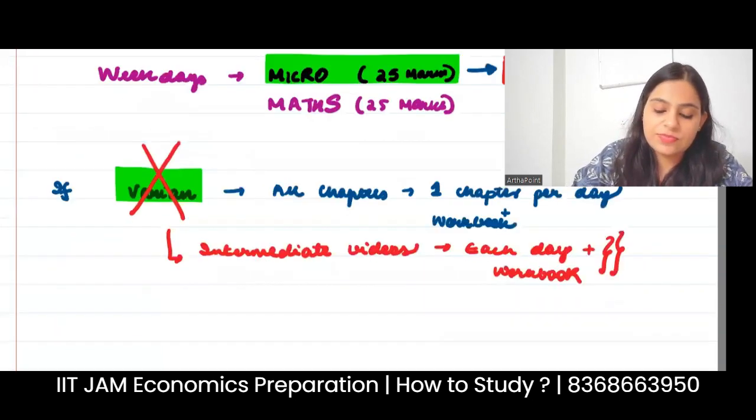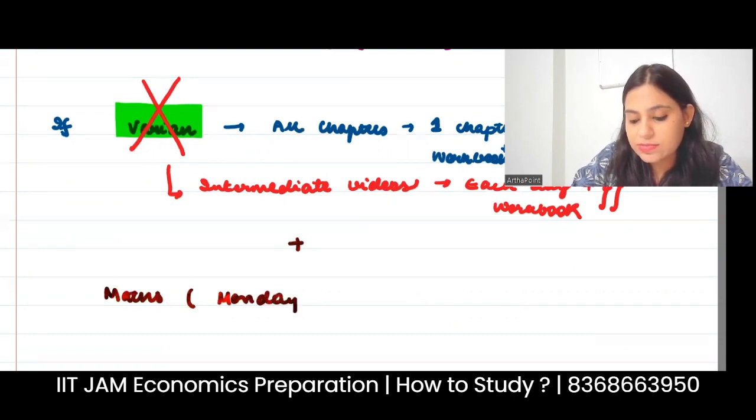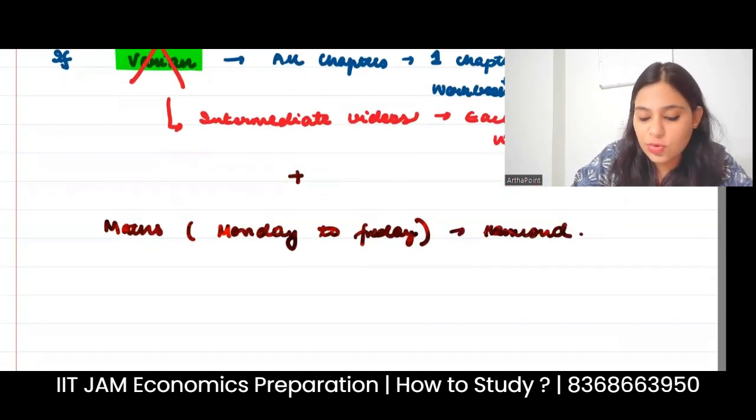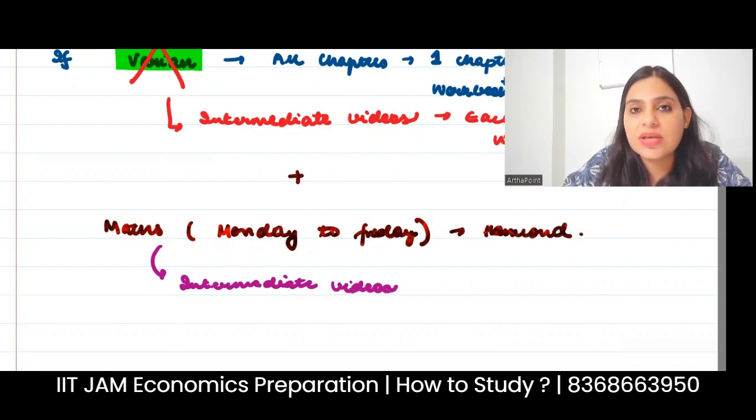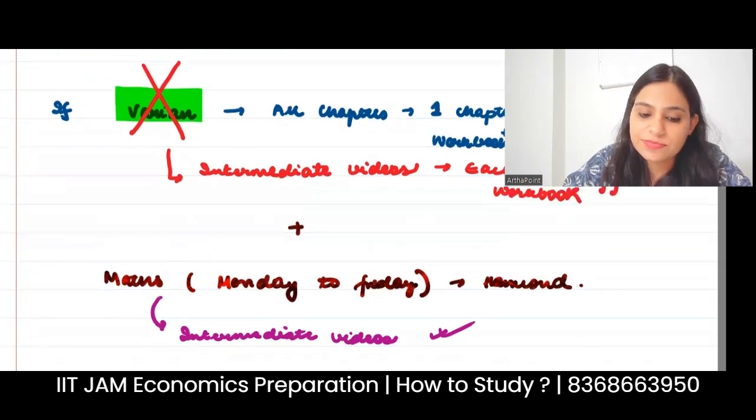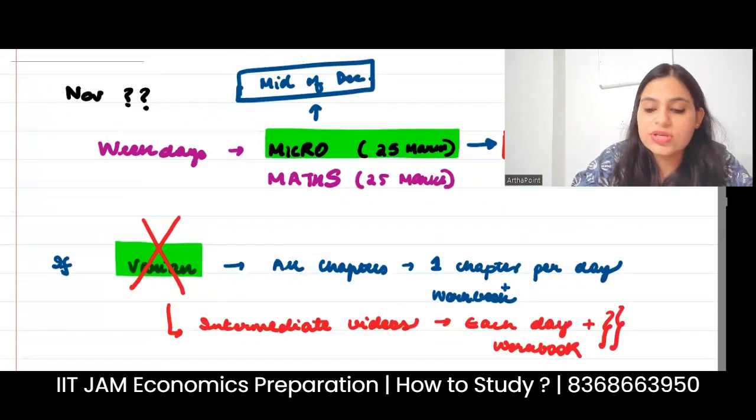For maths, again, same Monday to Friday. Again, 1.5 hours. Do it from Hammond. If you have purchased the course, go to the intermediate videos and chapter by chapter do each chapter. No time to do the basic. Leave that. Intermediate will cover the basic concepts. Go to the intermediate videos directly and start with that. This will work on your weekdays, and this will work from now till the mid of December.